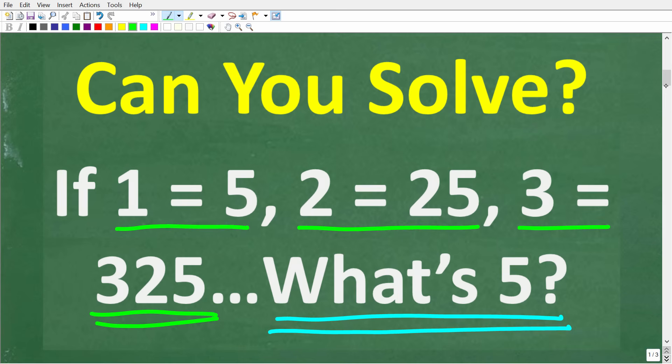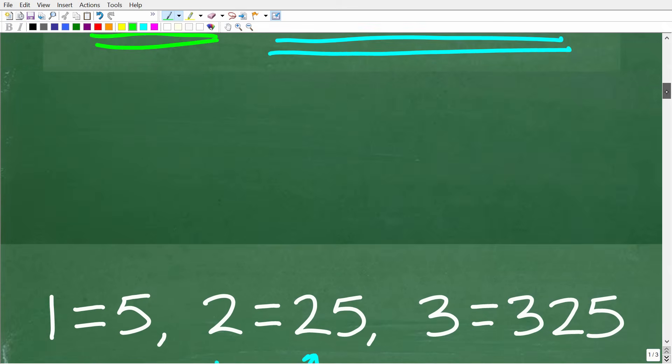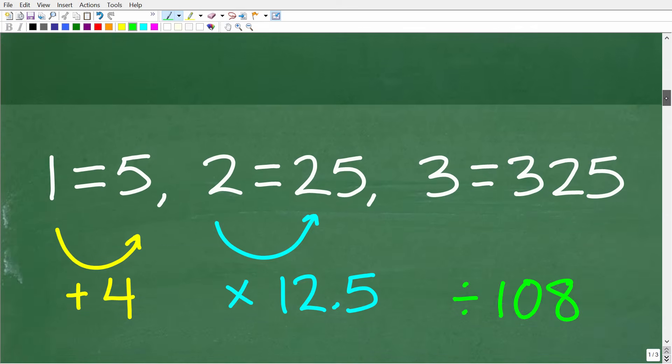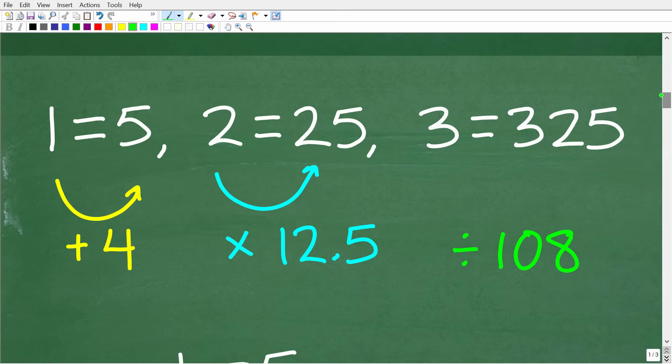So let's take a look at the pattern using some math, right? So maybe there's some sort of hidden mathematical code going on here. So if 1 is equal to 5, well, if we have 1 and then we're going to 5, maybe the rule here or the pattern is we add 4. That certainly works here, but it doesn't work in our next number, right? So 2 plus 4 would get us to 6, so that's not going to work.